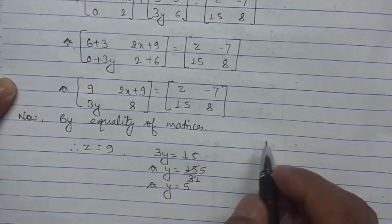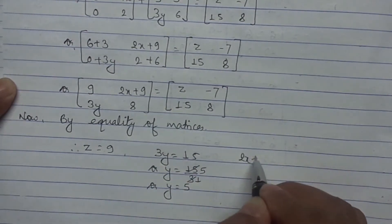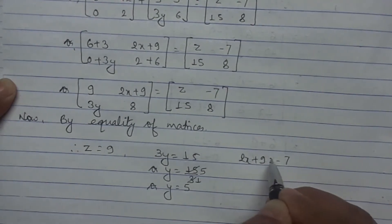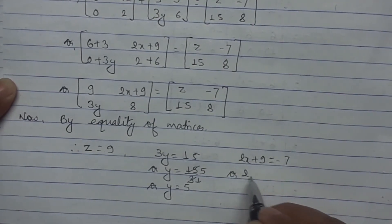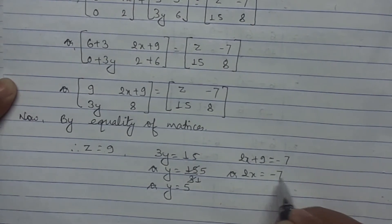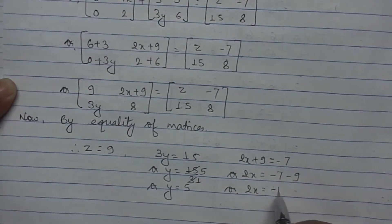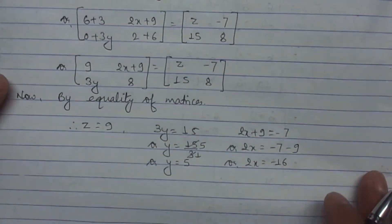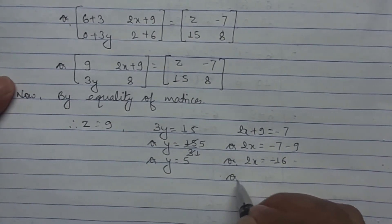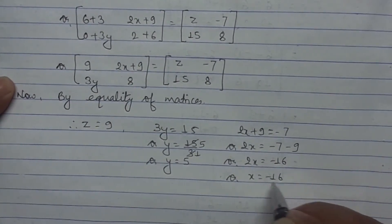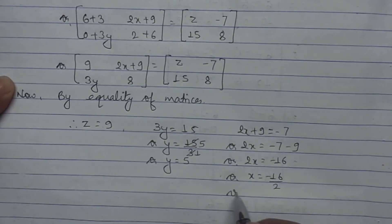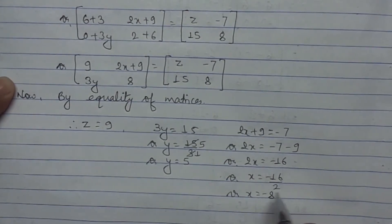2x plus 9 equals -7, so 2x equals -7 minus 9, which is -16. Therefore x equals -16 divided by 2, so x equals -8.